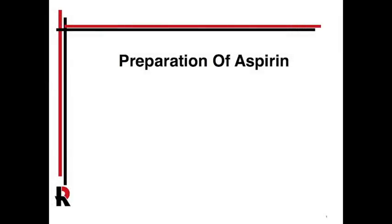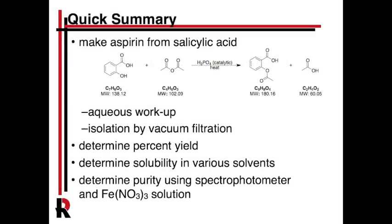This is the preparation of aspirin from the general chemistry lab manual. This is a pretty cool lab because we're actually going to make something. A lot of chemists spend their careers basically making things, and professional synthesis is one of the key professional occupations that chemists have. We're going to make something that we have all the time — that's aspirin, from salicylic acid.